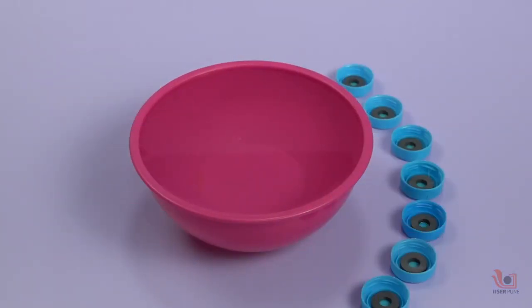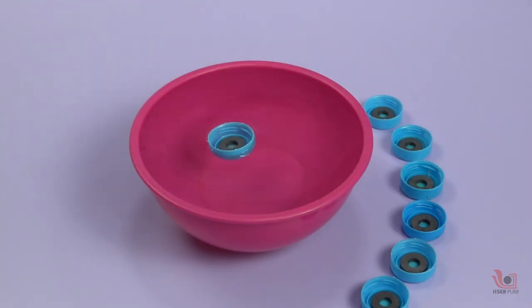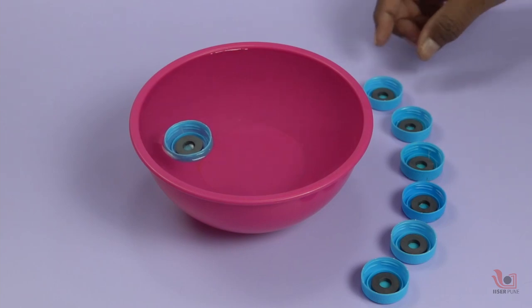Now take a bowl full of water and slowly place the magnets one by one in the water. Observe the pattern formed in the water bowl. When we place the single magnet in the water bowl, it floats and settles at one particular place.